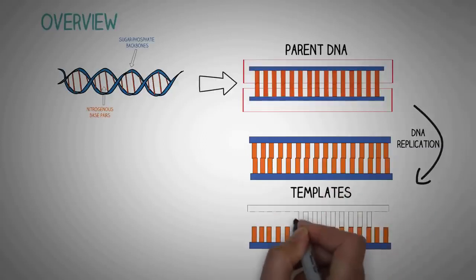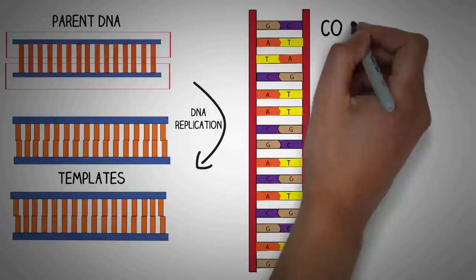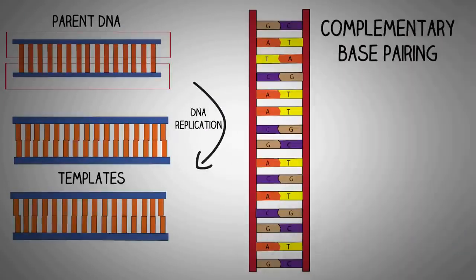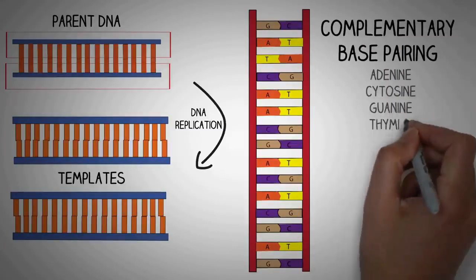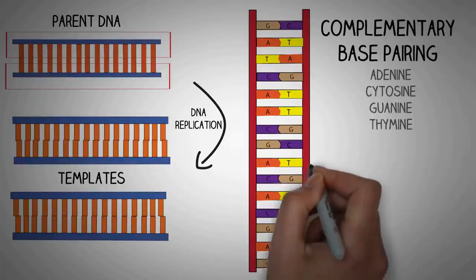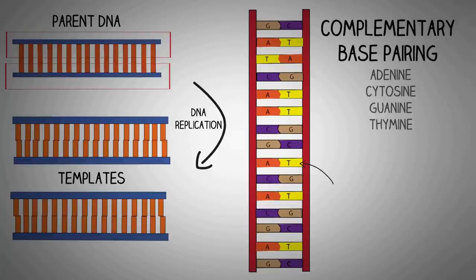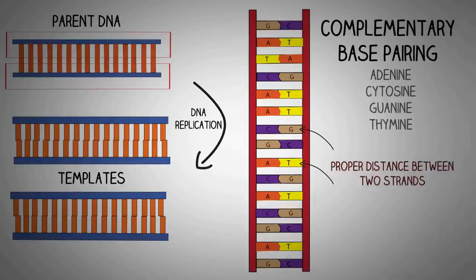This process is made possible by complementary base pairing. DNA consists of four nucleobases: adenine, cytosine, guanine, and thymine. In the DNA structure, adenine always pairs with thymine and guanine always pairs with cytosine. This is called Chargaff's rule of DNA complementary base pairing. This is done to maintain a proper distance between the two strands and to maintain a stable structure of the DNA helix.